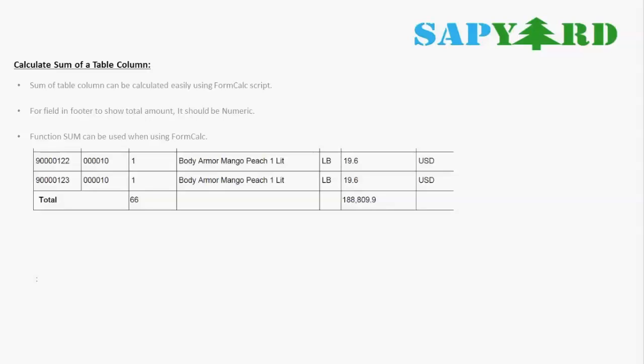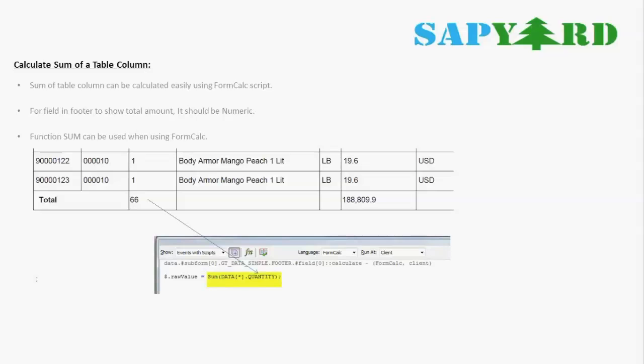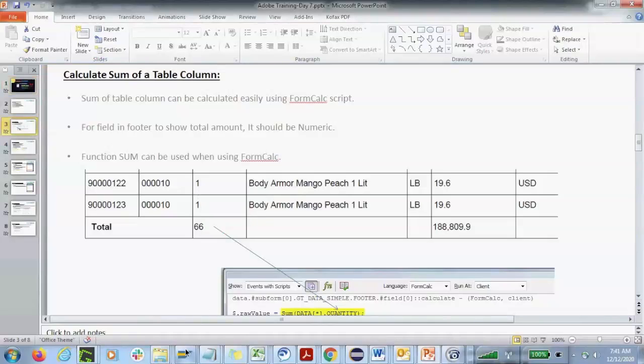There is a pre-delivered function called 'sum' in the FormCalc scripting language. As an example: we have many rows in a table, and after the final item we have a footer row showing the total amount and total quantity. The 66 is the sum of all quantities, and the amount is the sum of all the amount rows — calculated using this one-liner FormCalc script. I will show you in the system how it is done.